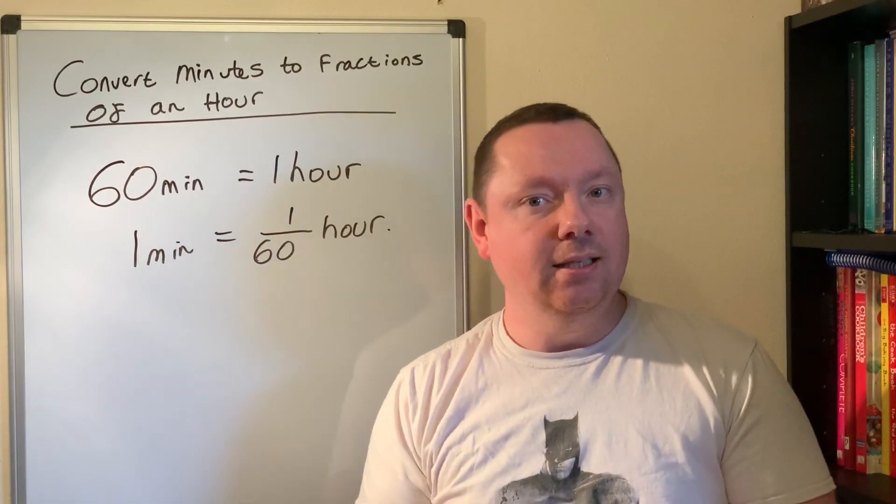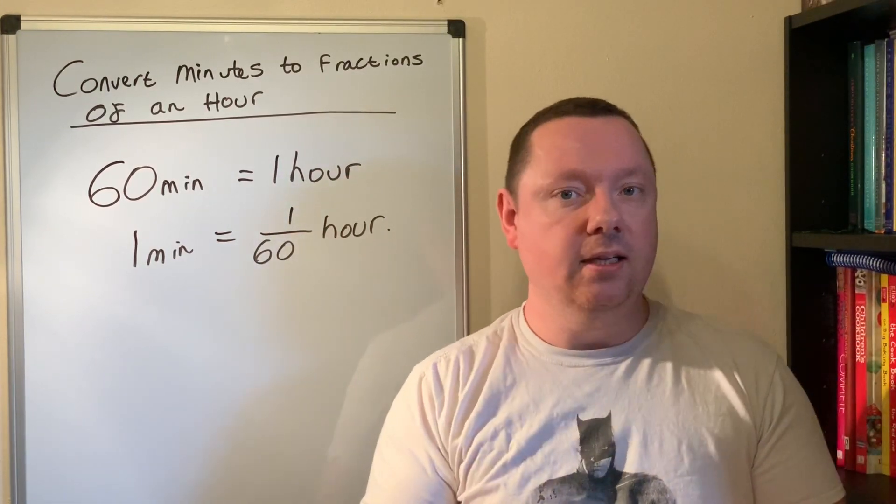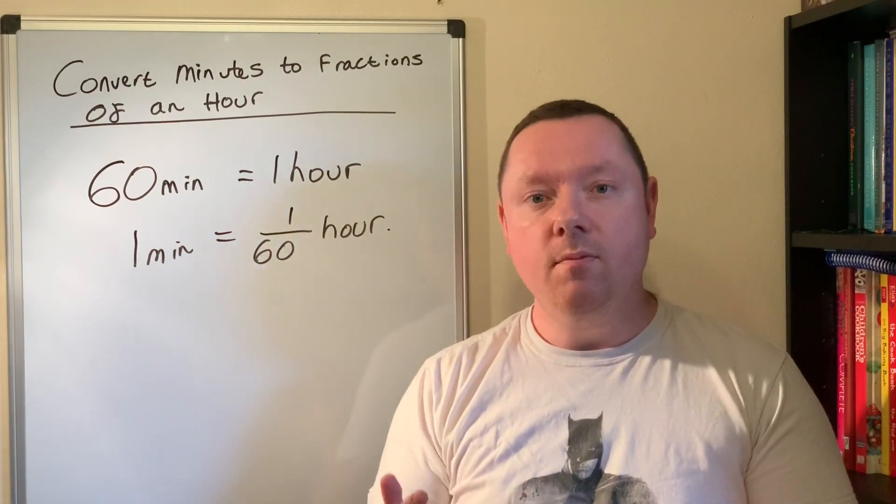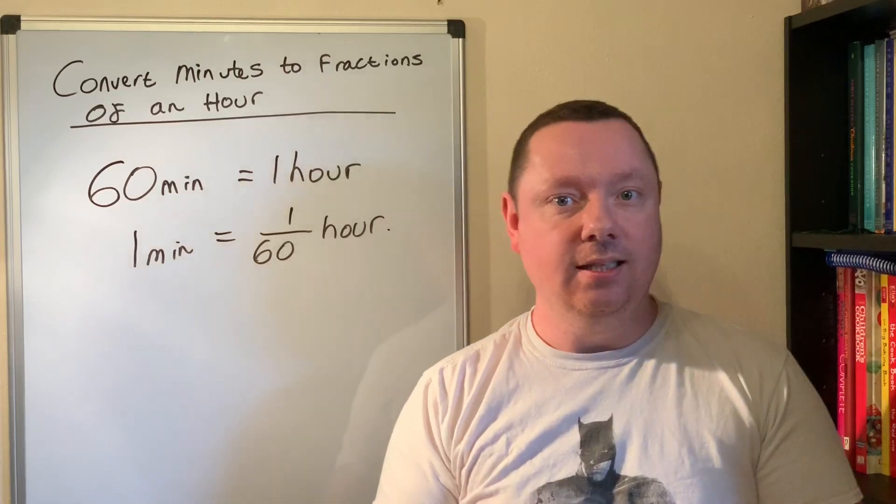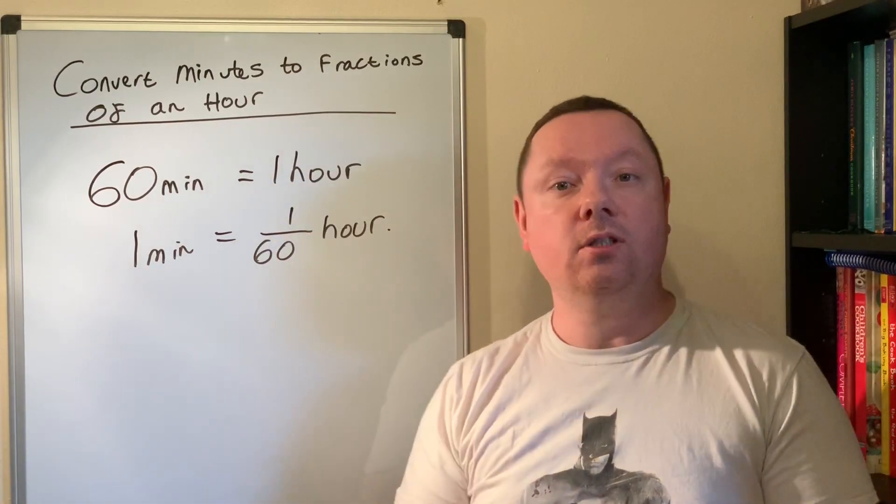So for 20 minutes it would be 20/60ths. 30 minutes would be 30/60ths and so on. So whatever minutes I have, if I take it as a fraction out of 60 that will tell me exactly how many hours I have straight away.